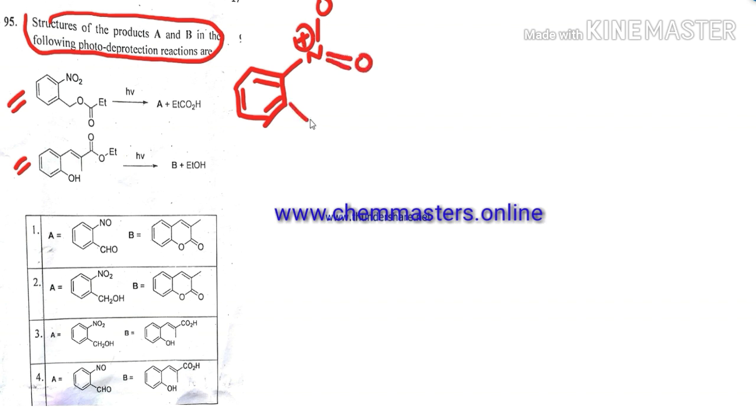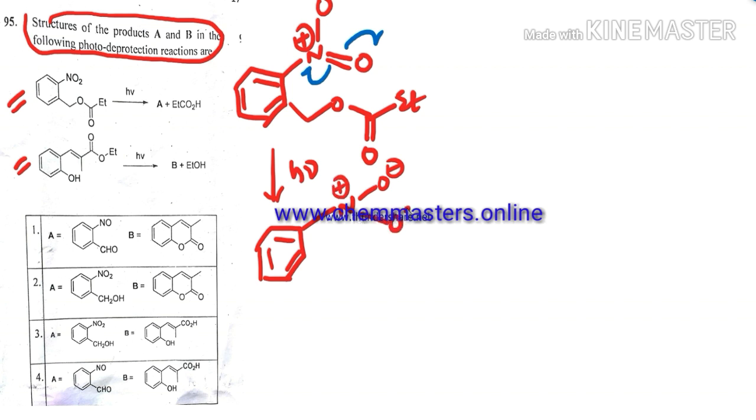So here NO2 can be written just like here. Whenever we expand functional groups, we can get an idea, which makes it easier for our mechanistic way. In the next step we have photochemical conditions, so here simply homolysis takes place, that means radical formation takes place on NO2. Just observe it.